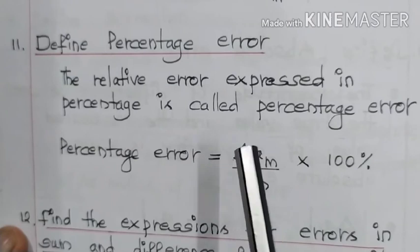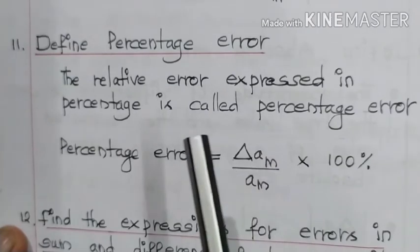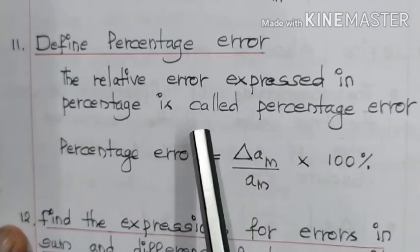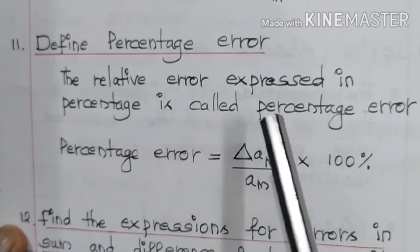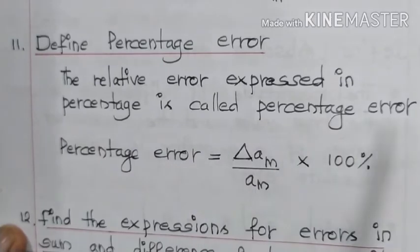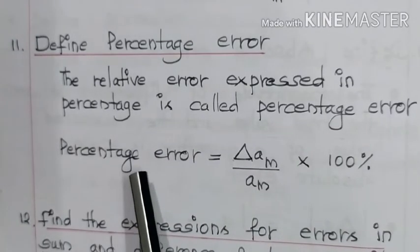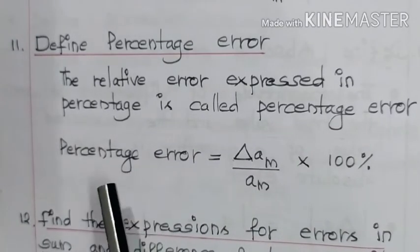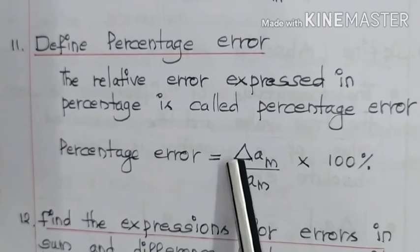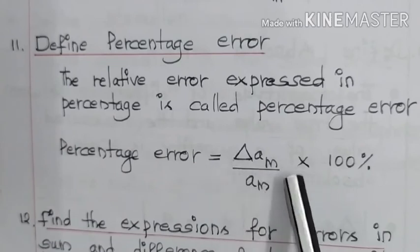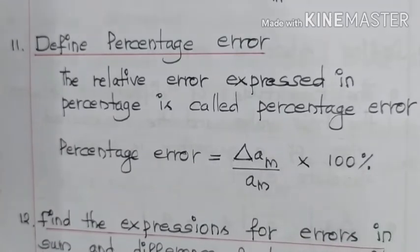If we express the relative error in percentage, then it becomes the percentage error. The expression for percentage error is: percentage error is equal to delta AM divided by AM, into 100%.